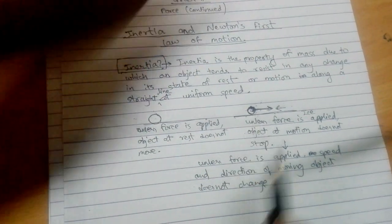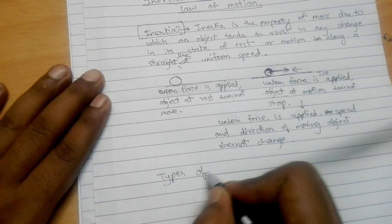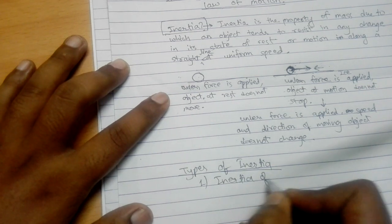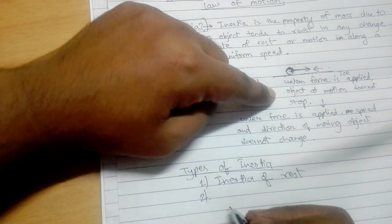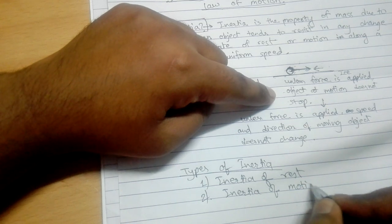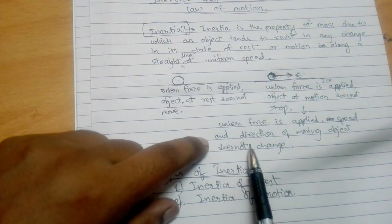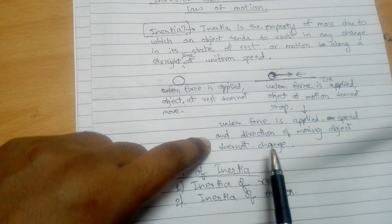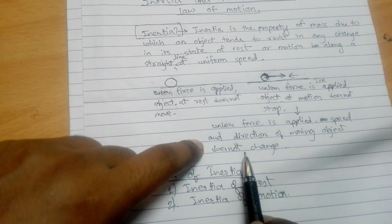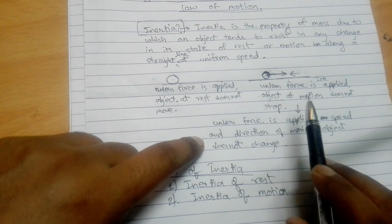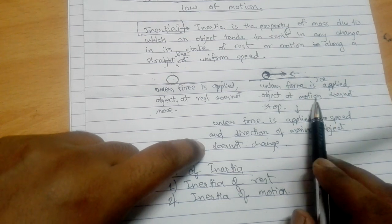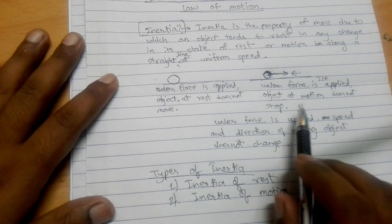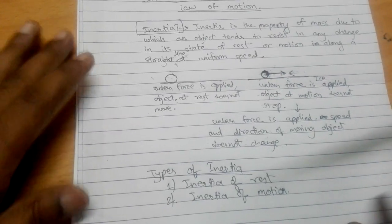So there are two special cases of inertia, which you can categorize as types of inertia. The inertia possessed by an object at rest is called inertia of rest, and the inertia possessed by an object in motion is called inertia of motion. Some authors refer to a third type called inertia of direction — meaning an object tends to resist change in direction unless external force is applied. However, in reality it is a special case of inertia of motion, so we will not count inertia of direction as a separate type.